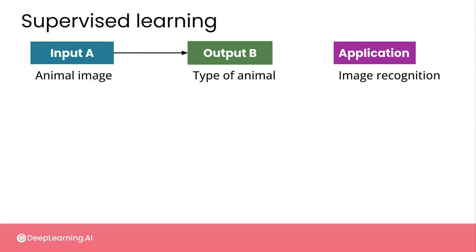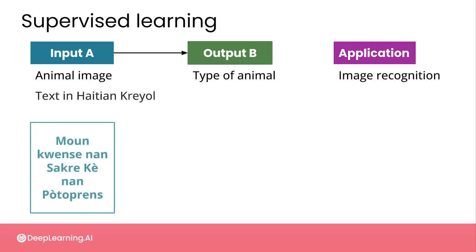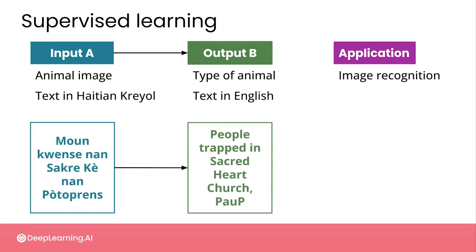Another example of supervised machine learning is translating text from one language to another — say from Haitian Creole, in this example, to English as the output. Of course, this could be between any two or more languages. This is an example of what's called machine translation, and it's a type of supervised learning that you'll see more of in the third course.